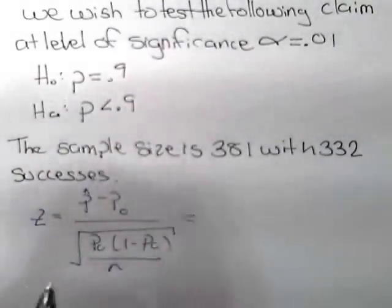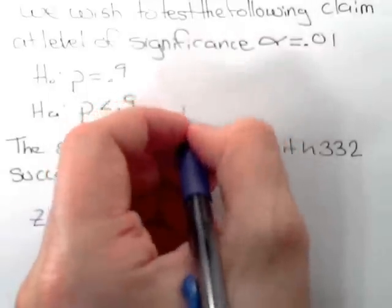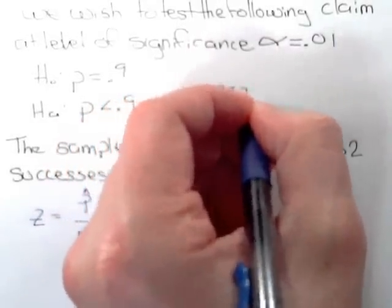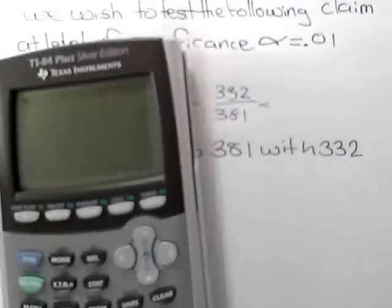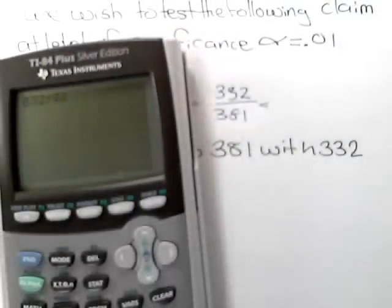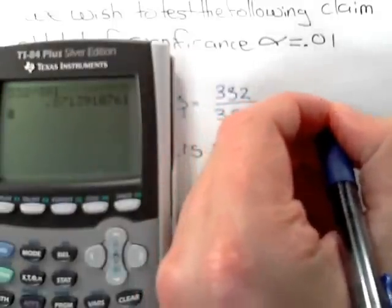p hat in this situation is the number of successes divided by the sample size. So p hat equals 332 over 381, which rounded to four decimal places is 0.8714.